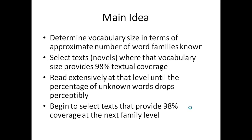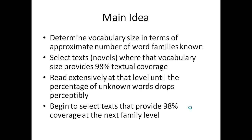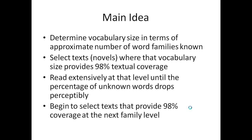If you know 7,000 words, you want to read books where 7,000 words gives you 98% comprehension. If you know 10,000, you want books where 10,000 words gives you 98% textual coverage. Then you proceed to read extensively at that level until you notice that the percentage of unknown words has really started to drop. It takes a while — you'll need to read a number of books — and then you can proceed to the next stage, selecting texts that provide 98% coverage at the next highest word family level.